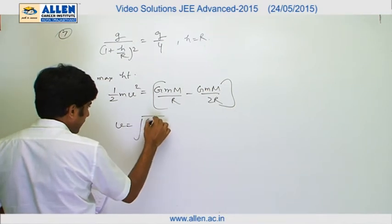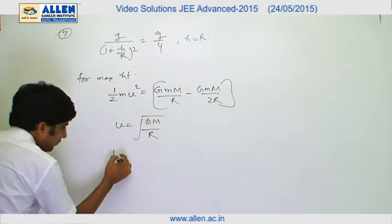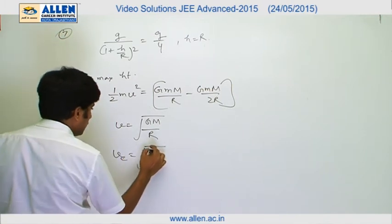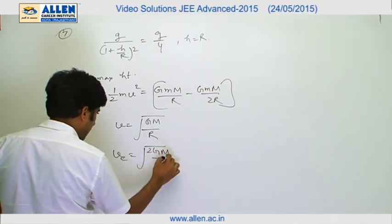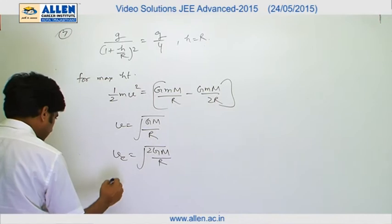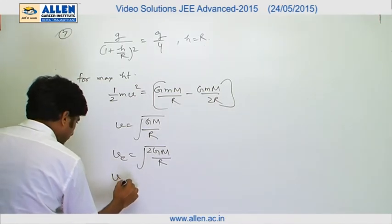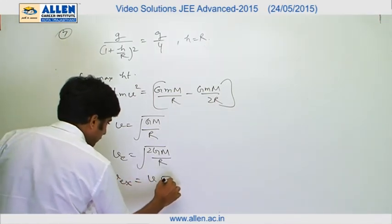As we know that escape velocity is given by √(2GM/r). Therefore, we can say that v_escape equals to v into √2. Therefore, the answer is n equals to 2.